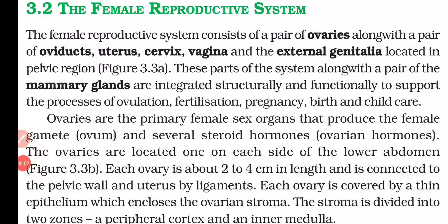Ovaries are located one on each side of the lower abdomen. Each ovary is about two to four centimeters in length and is connected to the pelvic wall and the uterus by ligaments. Each ovary is covered with a thin epithelium enclosing the ovarian stroma, which is divided into two zones: the peripheral cortex and the inner medulla.